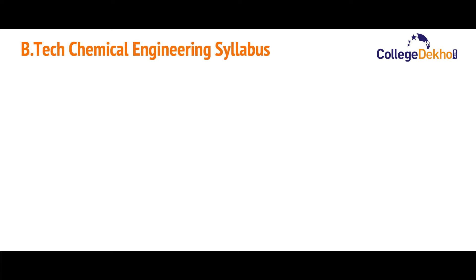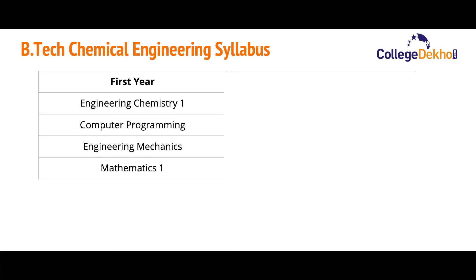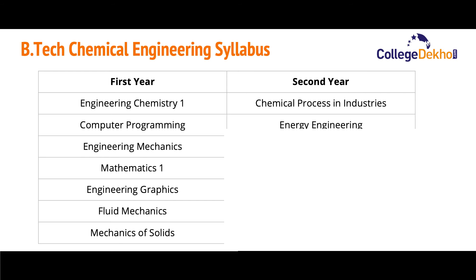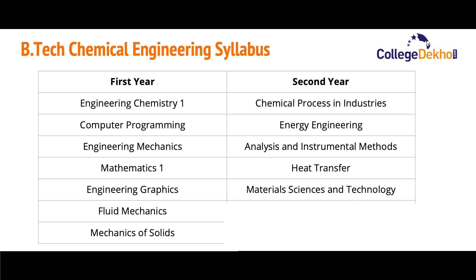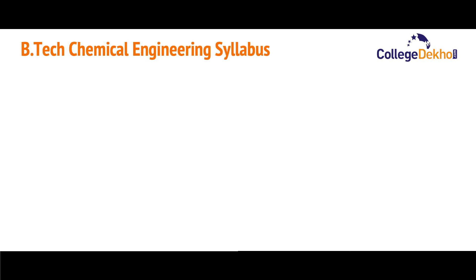For the B.Tech chemical engineering four-year syllabus, the first year covers subjects such as engineering chemistry, computer programming, engineering mechanics, mathematics, engineering graphics, fluid mechanics, and mechanics of solids. The second year covers chemical processing industries, energy engineering, analysis and instrumentation methods, heat transfer, material science and technology, mass transfer, instrumentation, dynamics, and control.